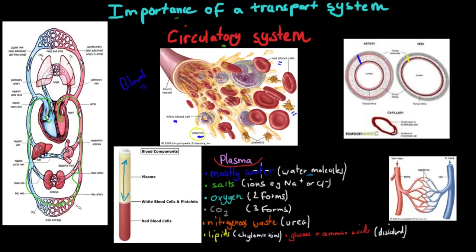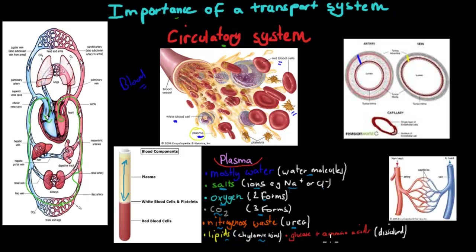Of that plasma, most of it is water, but there's also some salts in there as well — the salts are dissolved as ions, so for example NaCl will be Na+ or Cl−. We've got oxygen, which can travel in two forms: oxyhemoglobin and dissolved oxygen. We've got carbon dioxide also in plasma, which can travel in three forms: either as carbaminohemoglobin, as carbonate ions, or as dissolved in plasma. Nitrogenous waste can travel in the plasma as urea, lipids can travel in the blood as chylomicrons, which are protein-coated, and glucose and amino acids travel dissolved in plasma.